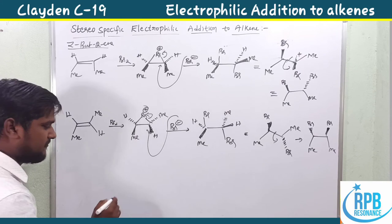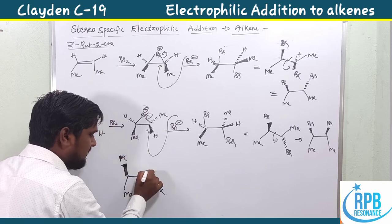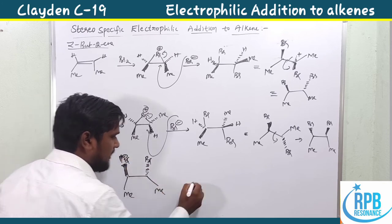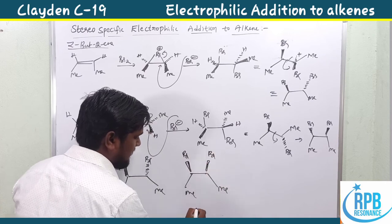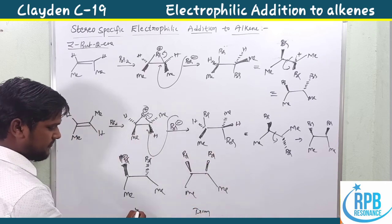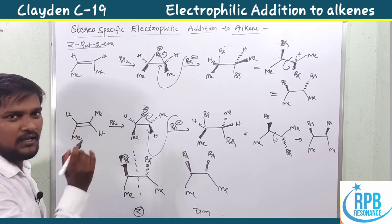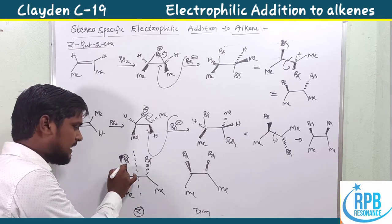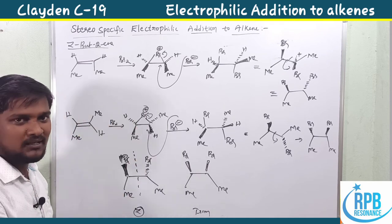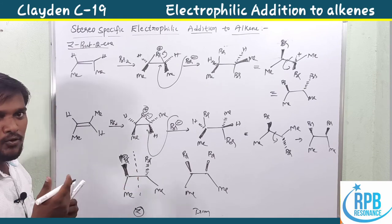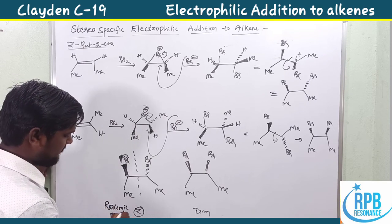Here are the two final conformations from Z-2-butene. One has bromine-bromine in a trans arrangement with methyl groups, and the other is the cis arrangement. After getting these two final products, we can look for the plane of symmetry. If you cut the molecule into two equal halves, they cannot superimpose or mirror each other, so these are not meso compounds - they produce a racemic mixture.